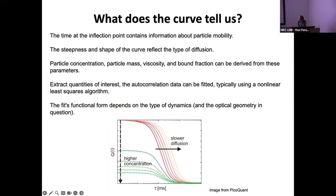The autocorrelation function is computed in real time with a hardware correlator. At time zero we have one (perfectly correlated) and depending on the speed of diffusion and what's happening with the molecule, the correlation drops to zero. The inflection point shows diffusion speed — slower diffusion shifts the curve. The height gives concentration. The curve isn't always simple — it can step due to restricted motion or different patches. Fitting the correlation curve allows you to extract diffusion coefficients, hydrodynamic radii, and kinetic chemical reaction rates.